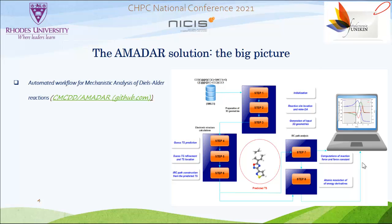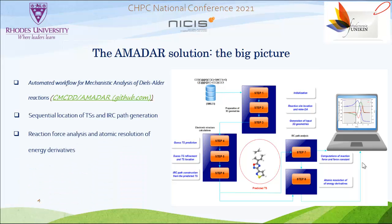AMADAR stands for the Automated Workflow for Mechanistic Analysis of Diels-Alder Reactions. The source code of the package is freely accessible on GitHub. As you can see on the screen on the right, the prediction of the transition state is a circular process, starting from the cycloadduct and going uphill to the transition state. This is achieved through successive optimization and refinement at different levels of theory. Once located, the transition state is then used to build the intrinsic reaction coordinate path, which is used to perform reaction force analysis and atomic resolution of energy derivatives along the reaction coordinate. All details of these steps are saved in configuration files, which are updated by the user, and the results of some steps can be returned as image files.